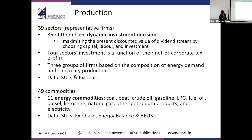We have 49 commodities, 11 of which are energy commodities: coal, peat, oil, gasoline, LPG, fuel oil, diesel, kerosene, natural gas, other petroleum products, and electricity. By explicitly including these carbon commodities, we can track where they are used and how emissions flow through the production process. We do have renewables including solar and wind, and we're currently adding biomass and hydrogen — though it's challenging in a CGE model to introduce things not yet present in the economy.